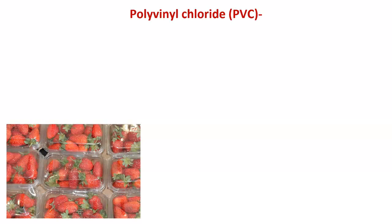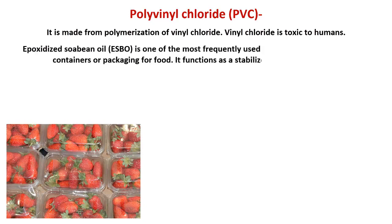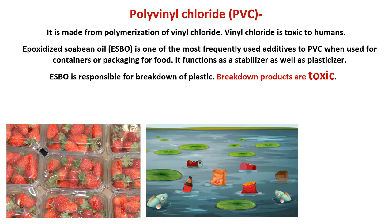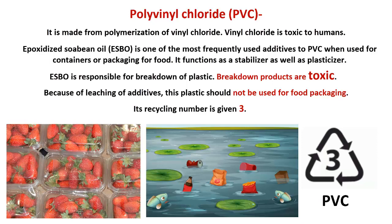Polyvinyl chloride (PVC) is made from the polymerization of vinyl chloride. Vinyl chloride is toxic to humans. Epoxidized soybean oil (ESBO) is one of the most frequently used additives to PVC when used for food containers or packaging. It functions as both a stabilizer and a plasticizer. ESBO is responsible for breakdown of the plastic, and the breakdown products are toxic. Because of leaching of additives, this plastic should not be used for food packaging. Its recycling number is 3.